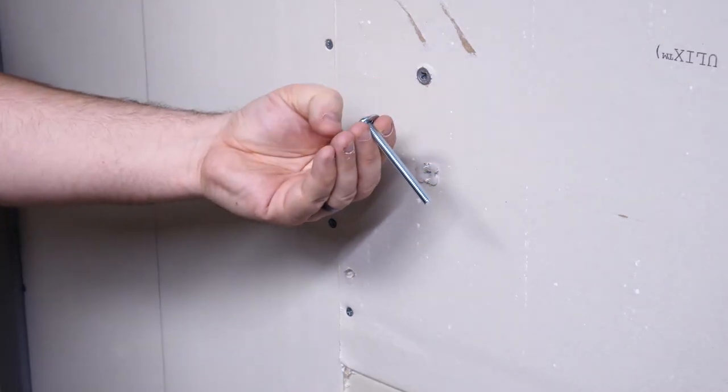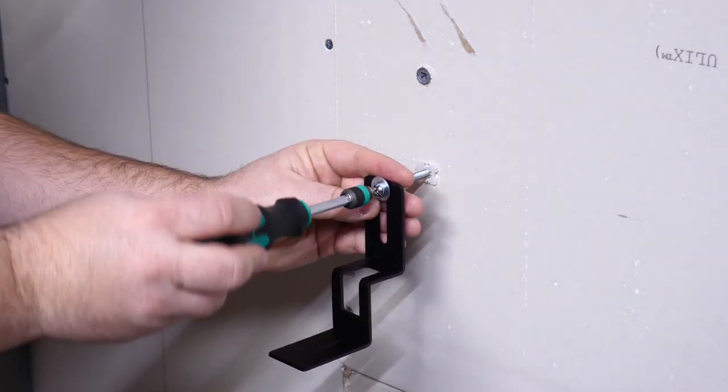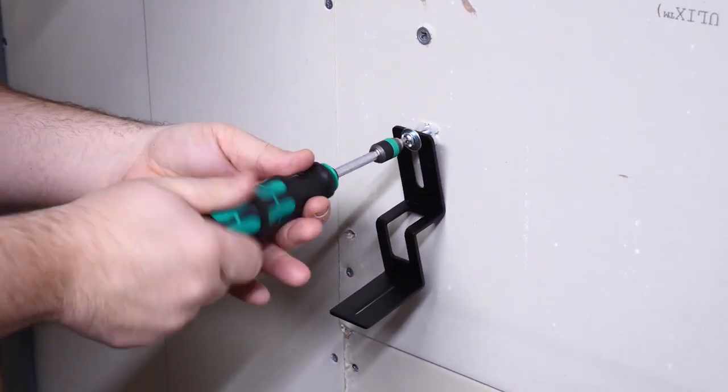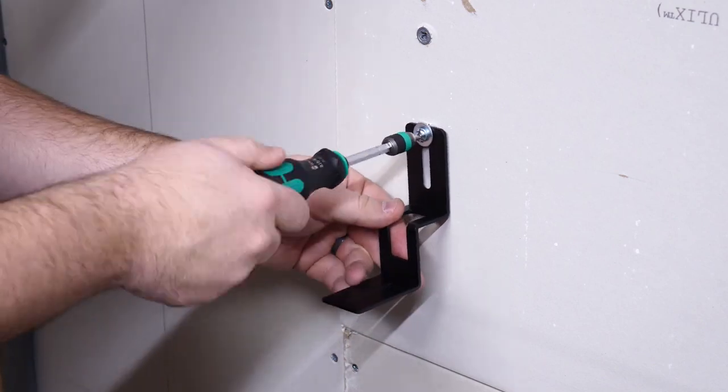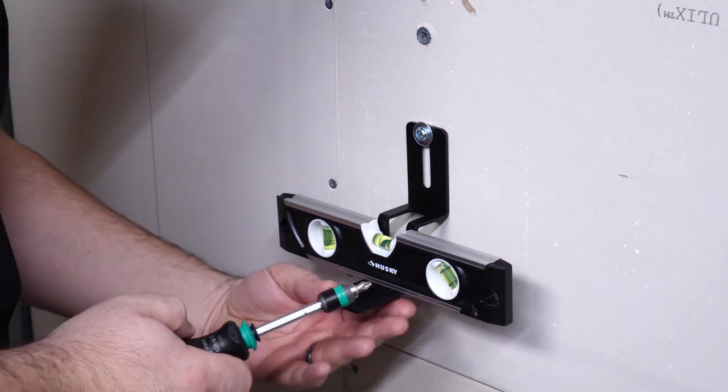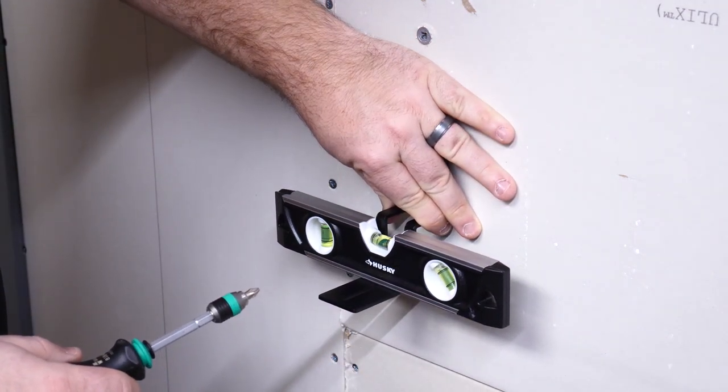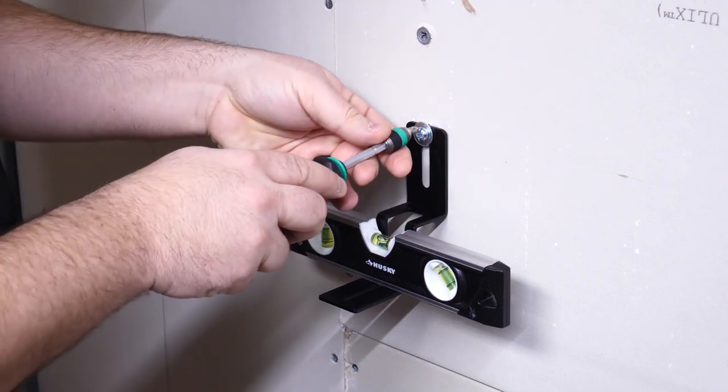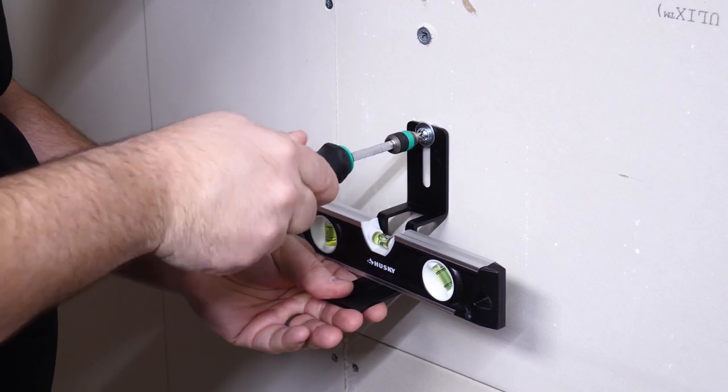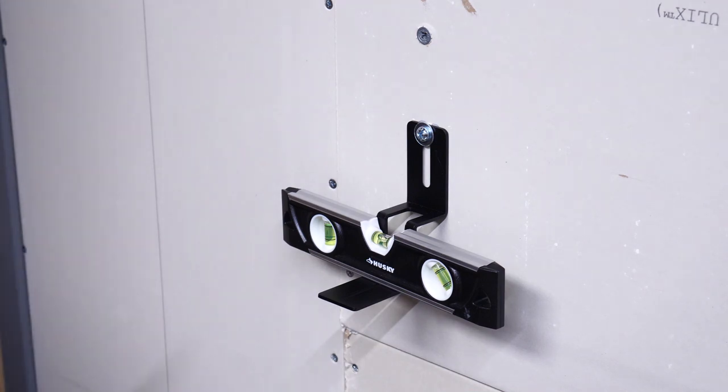Then we just put the piece we are trying to mount against the wall and start to screw by hand until I feel it catches. Then we can use a drill if we wanted. Go ahead and check level. Yeah, that looks pretty good. And we're done.